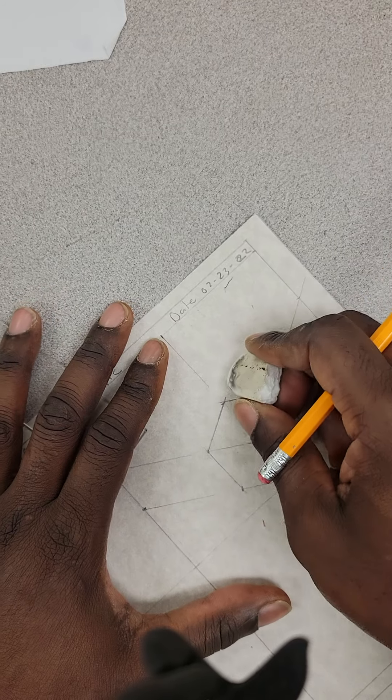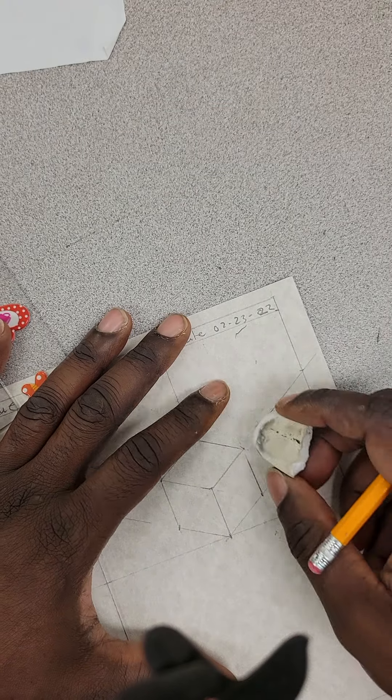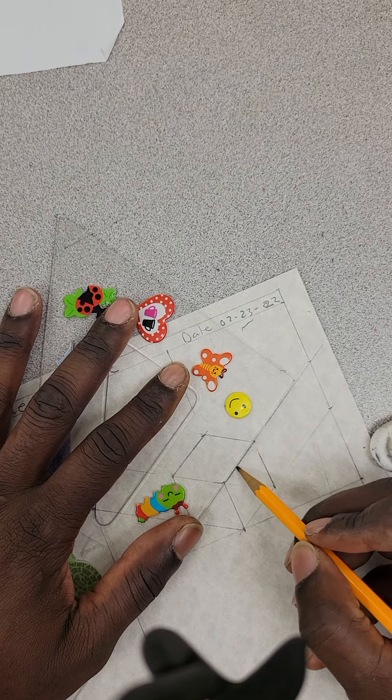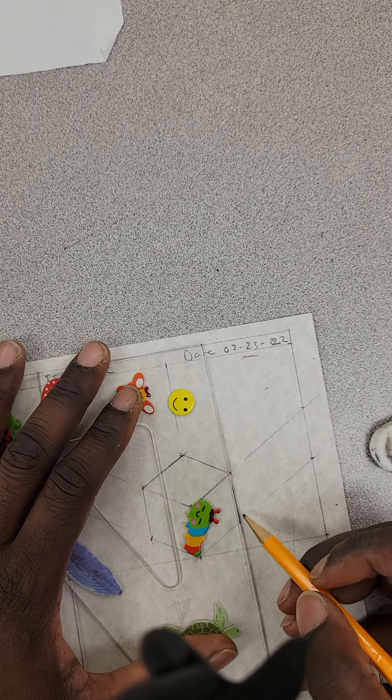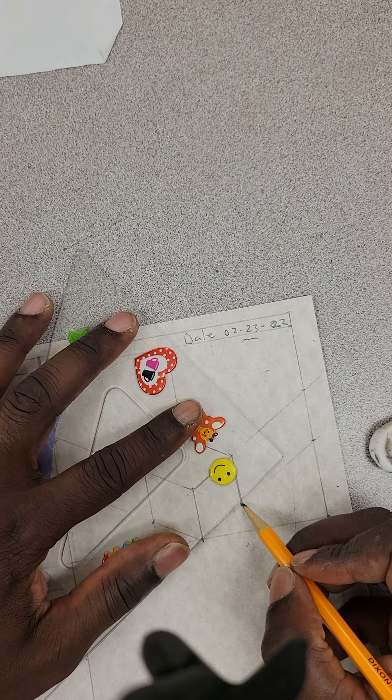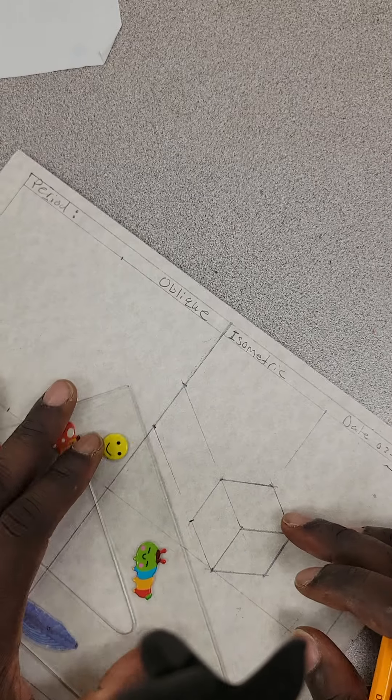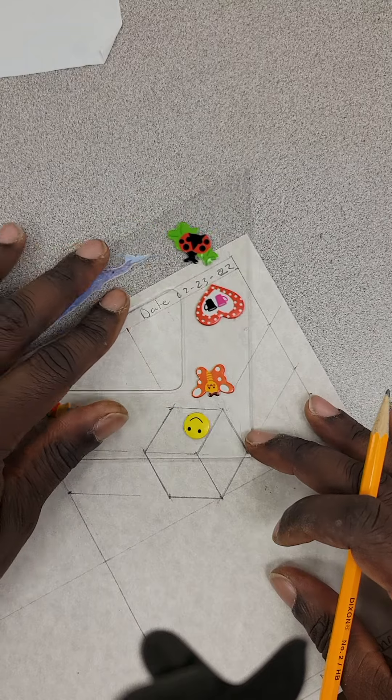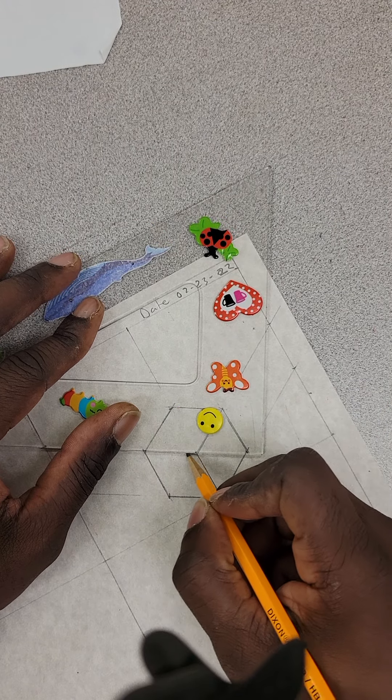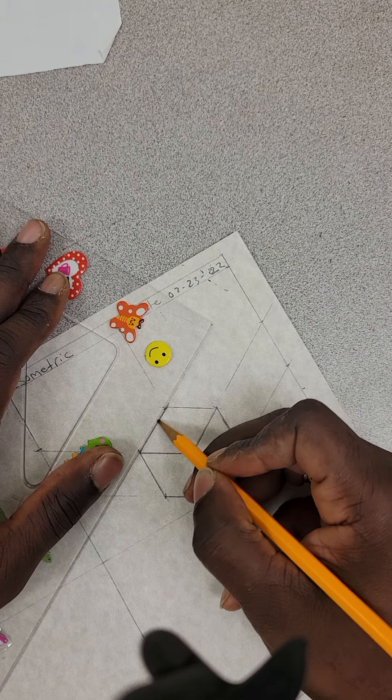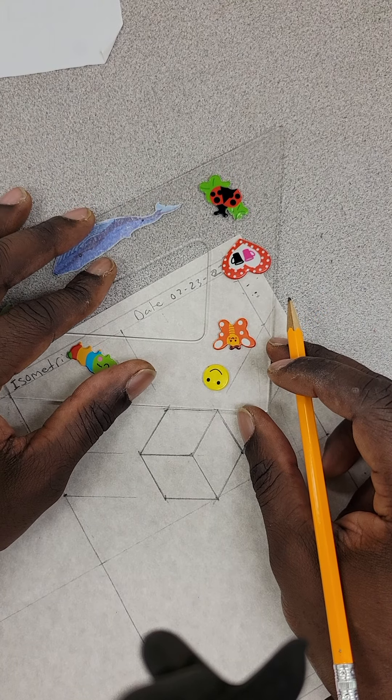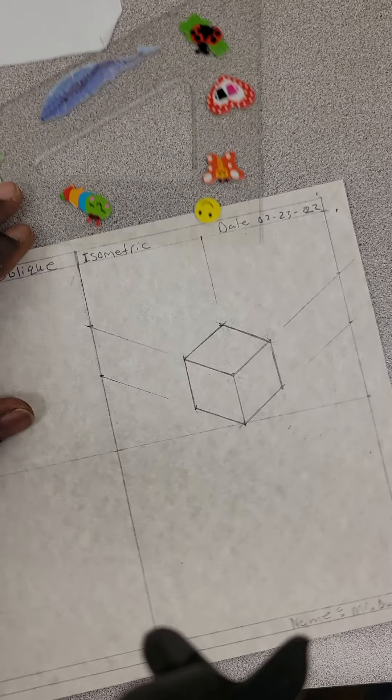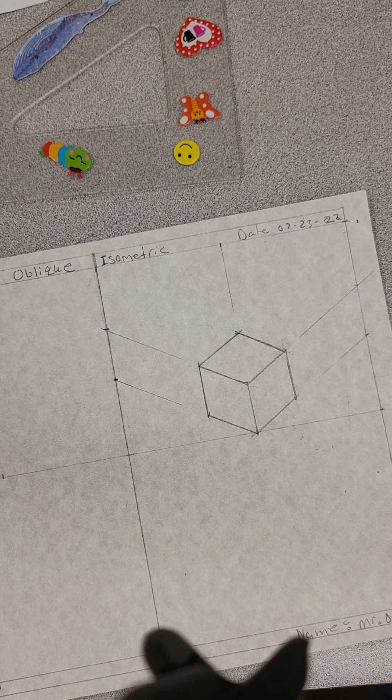Again, hit that like button, subscribe, and you'll get more videos about these technical drawings, just using a ruler. Don't need a protractor or anything else but your ruler. Simple concepts, and you'll be able to do this anywhere, everywhere. In the next video, you'll see how to do the isometric challenge. There you have it. Cheehoo! Woo!